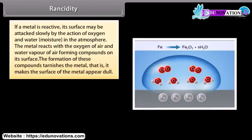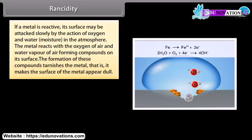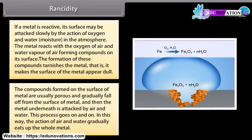If a metal is reactive, its surface may be attacked slowly by the action of oxygen and water in the atmosphere. The metal reacts with the oxygen of air and water vapor of air, forming compounds on its surface. The formation of these compounds tarnishes the metal, that is, it makes the surface of the metal appear dull. The compounds formed on the surface of metal are usually porous and gradually fall off from the surface of metal, and then the metal underneath is attacked by air and water. The process goes on and on. In this way, the action of air and water gradually eats up the whole metal.